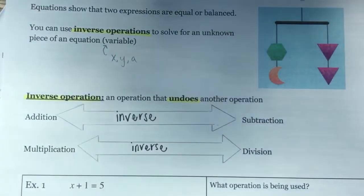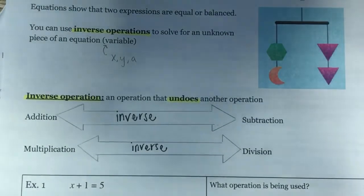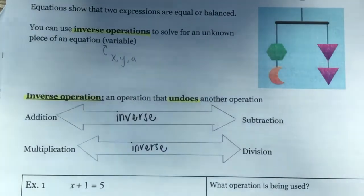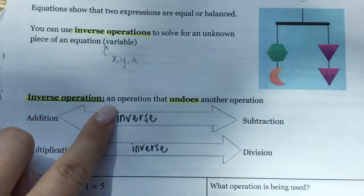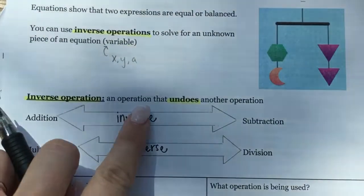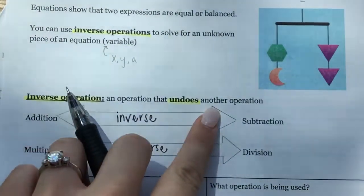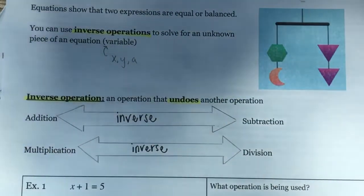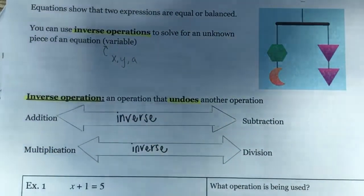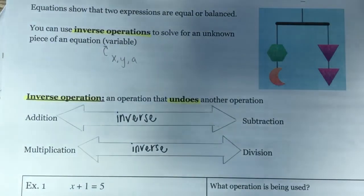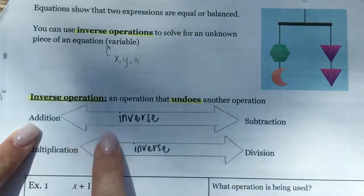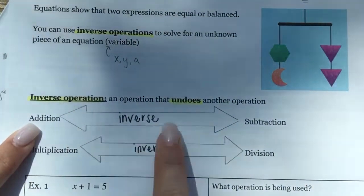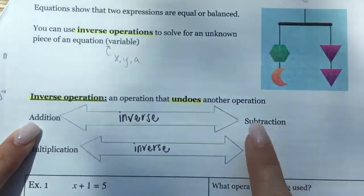Inverse operations are operations that undo another one — they basically work like opposites. Make sure you have this definition in your notes: an inverse operation is an operation that undoes another operation. They just reverse each other. If my operation is addition, the inverse operation is subtraction.